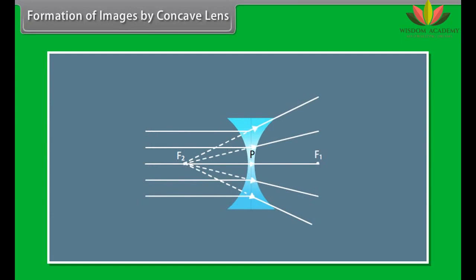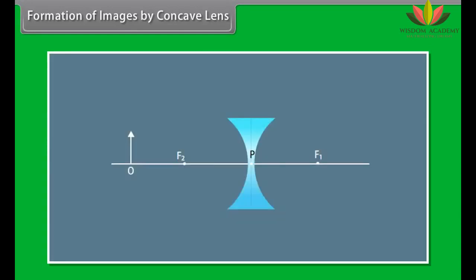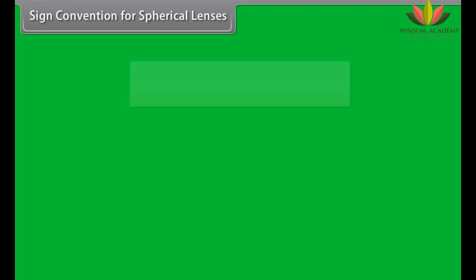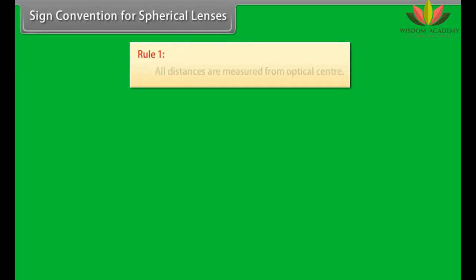Formation of images by concave lens: When the object is at infinity, the image forms at F on the same side — virtual, erect, and diminished to a point. When the object is placed at any distance, the image forms on the same side between the optical center and F — virtual, erect, and diminished.